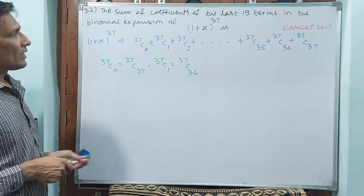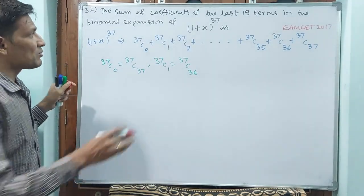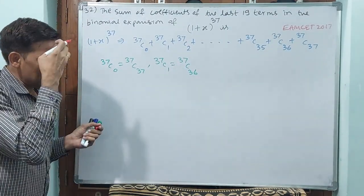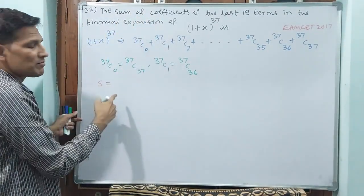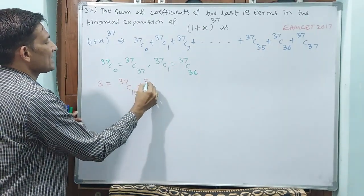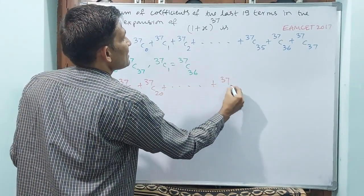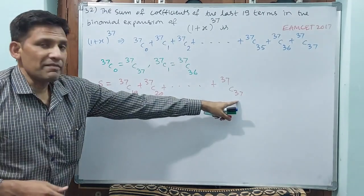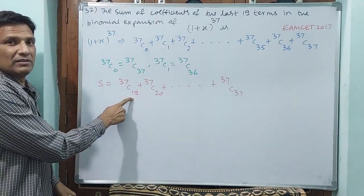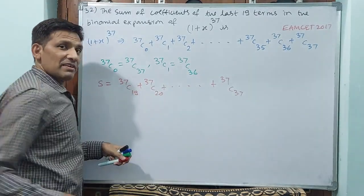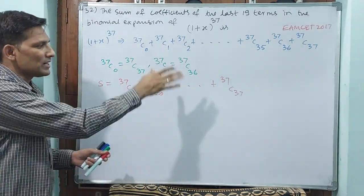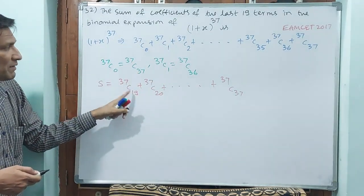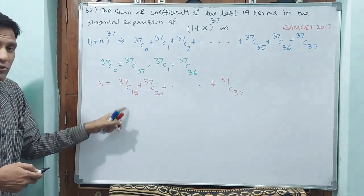They are asking only the last 19 terms. Total terms in (1+x)^37 is 38 terms. Last 19 terms means 50% of them. The required sum S equals 37C19 plus 37C20 plus up to 37C37 — counting these gives exactly 19 terms. Now, 37 minus 19 equals 18, which means 37C18 is equivalent to 37C19, so the first 19 terms (37C0 to 37C18) are symmetric to the last 19 terms.